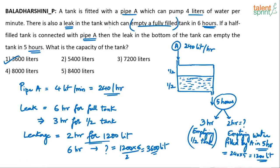It may appear a little confusing but it's actually a very simple solution. The process is continuous — as water is being filled by pipe A, it is being emptied by the leakage. But we break the leakage's 5-hour work into 2 parts: 3 hours emptying the half tank, and 2 hours emptying the 1200 liters filled by pipe A. Since the leakage removes 1200 liters in 2 hours, in 6 hours it removes 3600 liters — that is the tank's capacity. Option 1, 3600 liters, is the answer.